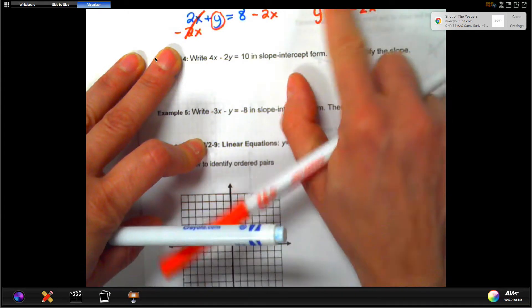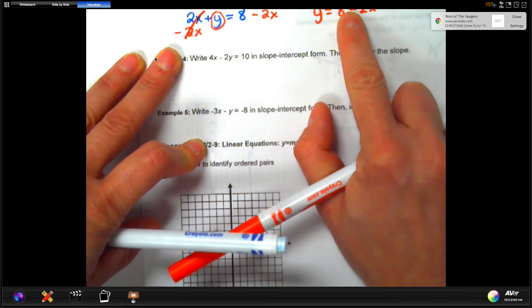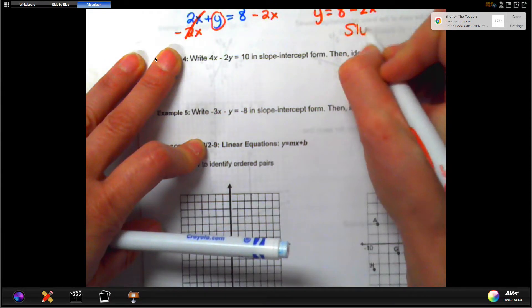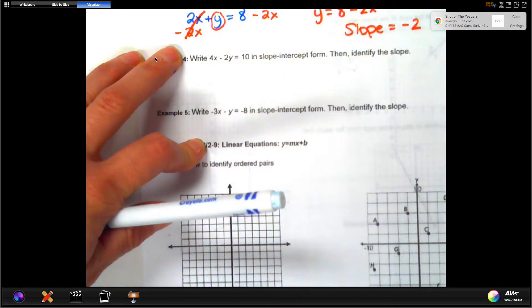So, our equation in slope-intercept form is y equal 8 minus 2x. Now, y is alone, and we have to look for the number next to the x, which in this case is 2. But, the minus sign is going to go with the 2, making our slope not positive 2, but negative 2. And that's our answer.